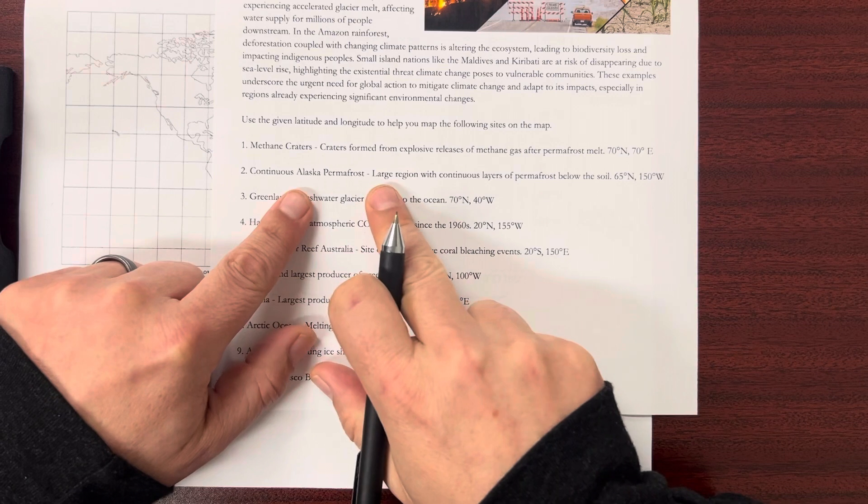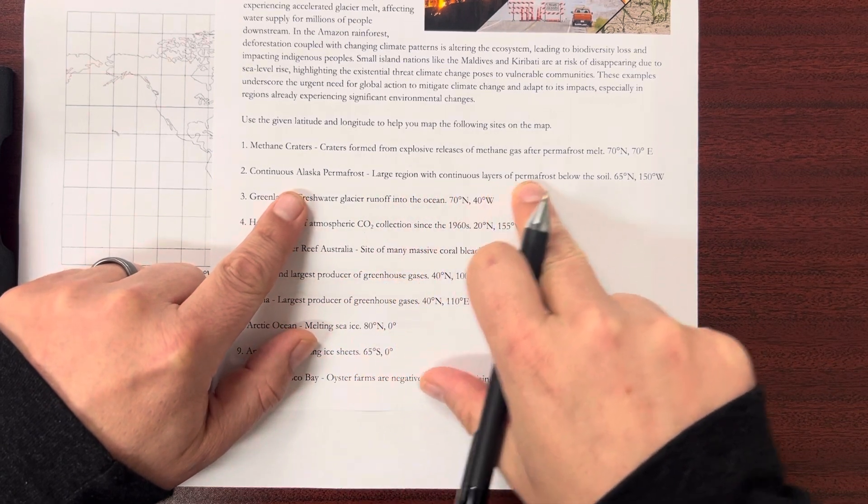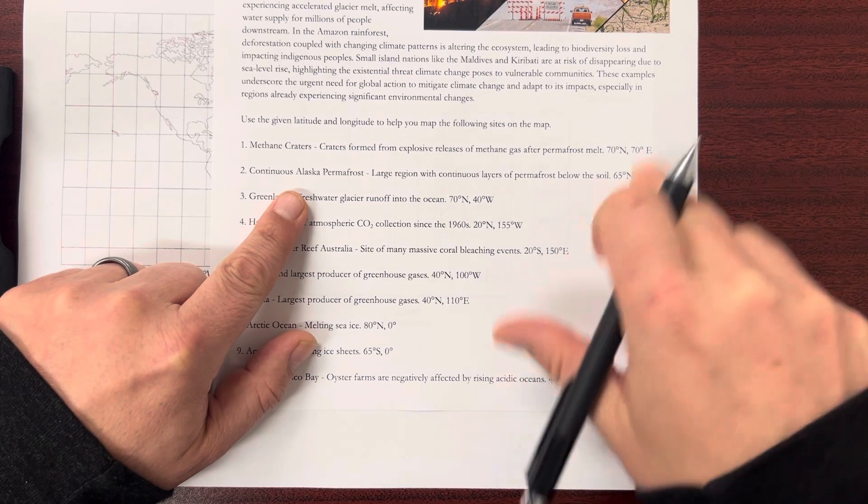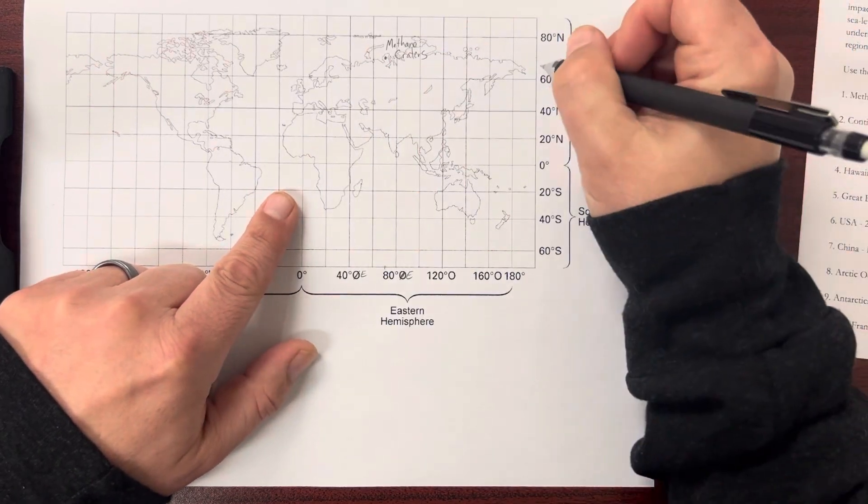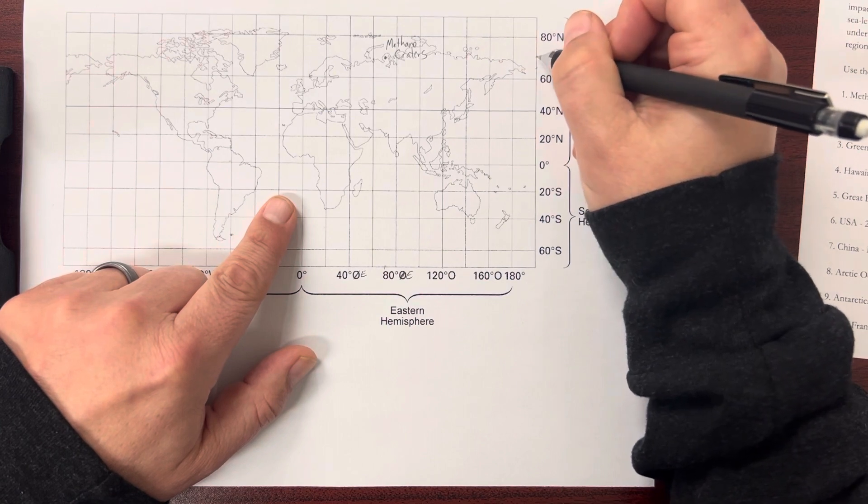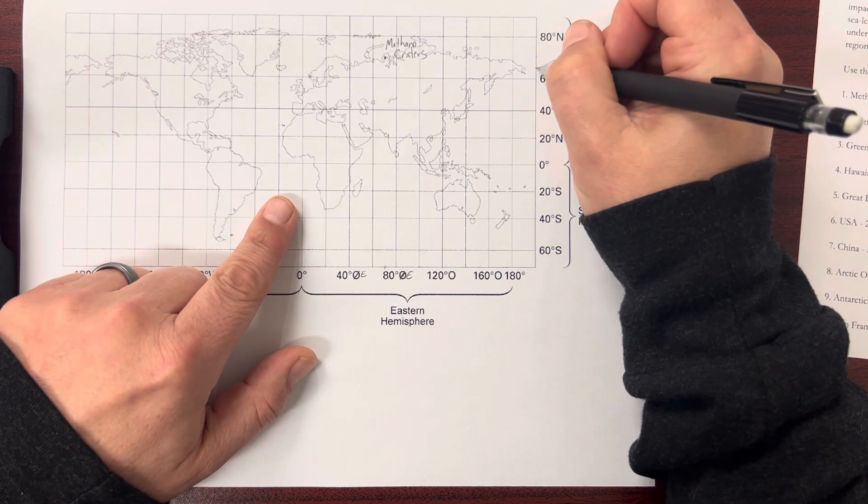Continuous Alaska permafrost. Large region with continuous layers of permafrost below the surface. 65 north, 150 west. So 65 north is probably about here, because it's 60, 70, 80. So 65 right about there.